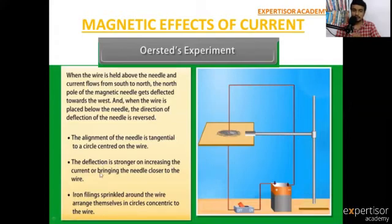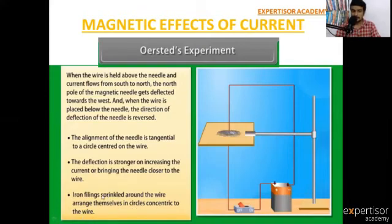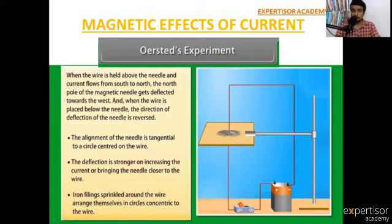The deflection is stronger on increasing the current or bringing the needle closer to the wire. Iron filings sprinkled around the wire arrange themselves in concentric circles around it. When these iron filings are brought near to the current-carrying wire, after some time they are arranged in the form of a circuit and acquire magnetic properties.